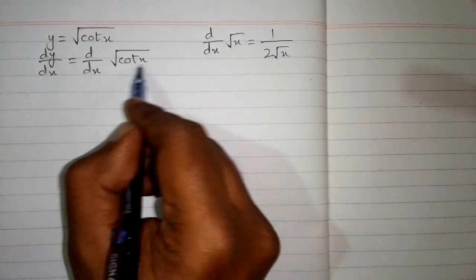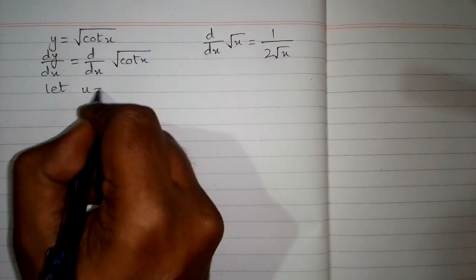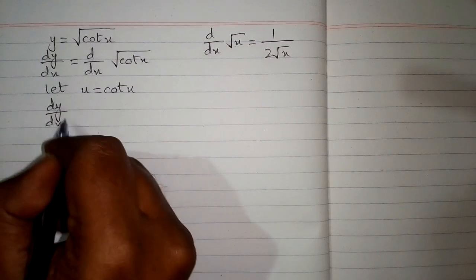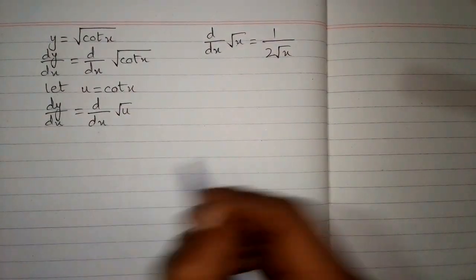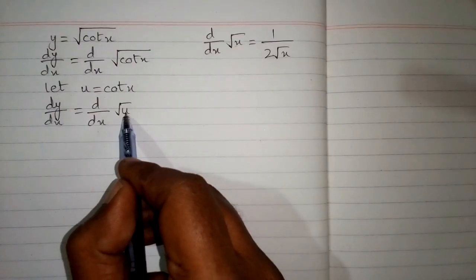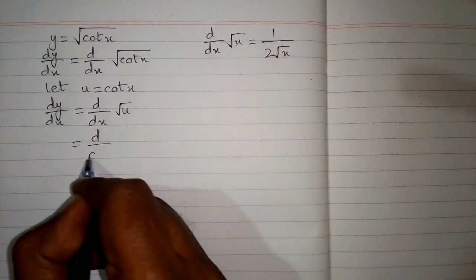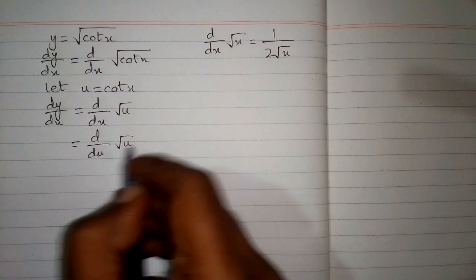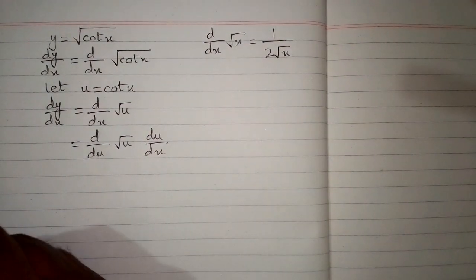And here we can see that we have cot x in place of this x. So let u is equal to cot x, then the derivative dy by dx is equal to d by dx of square root of u. Now again we cannot apply this formula because this variable and this variable are not same. So we must have du in place of this dx. So in order to balance this thing we will multiply it by du by dx, and this is called the chain rule of differentiation.